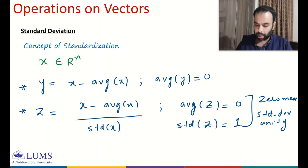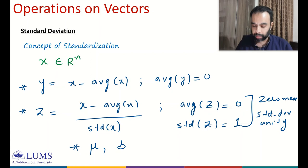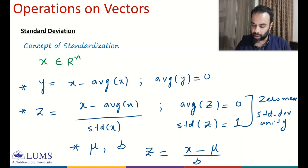In some textbooks, the average value of x is denoted by mu and standard deviation is denoted by sigma. Using mu and sigma, the concept of standardization is: z equals x minus mu, which makes it zero mean, divided by sigma, which makes it unity standard deviation.